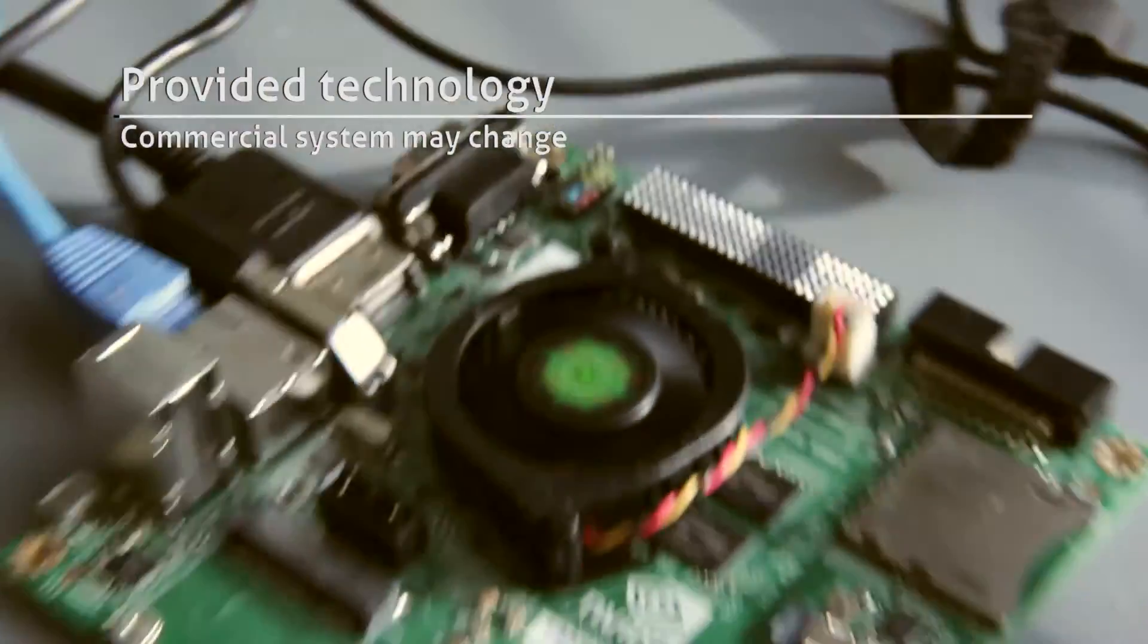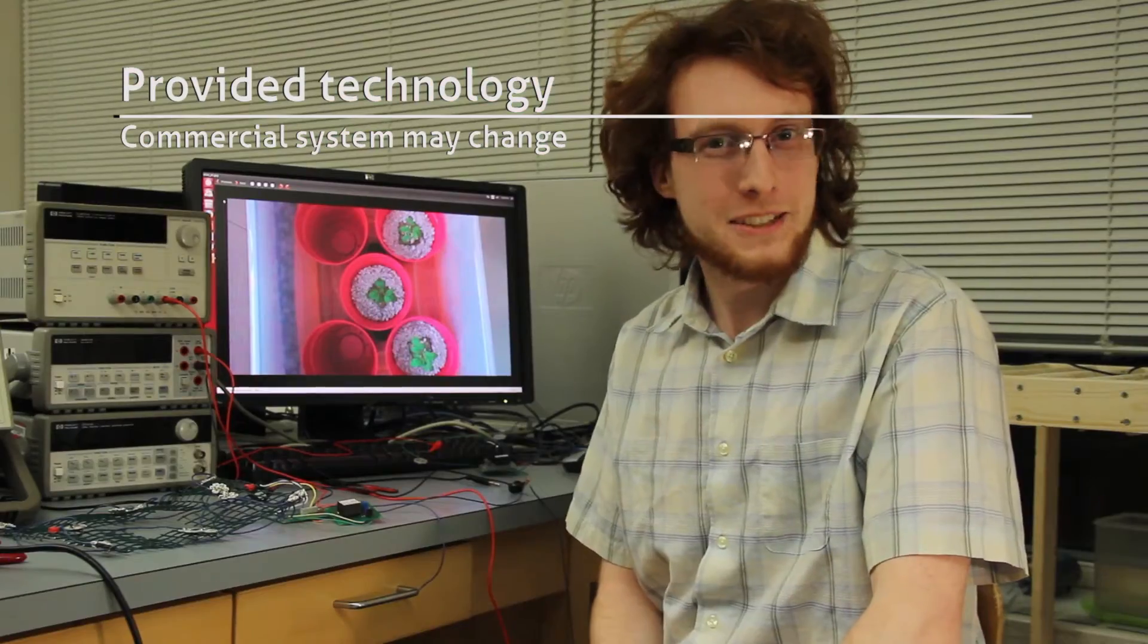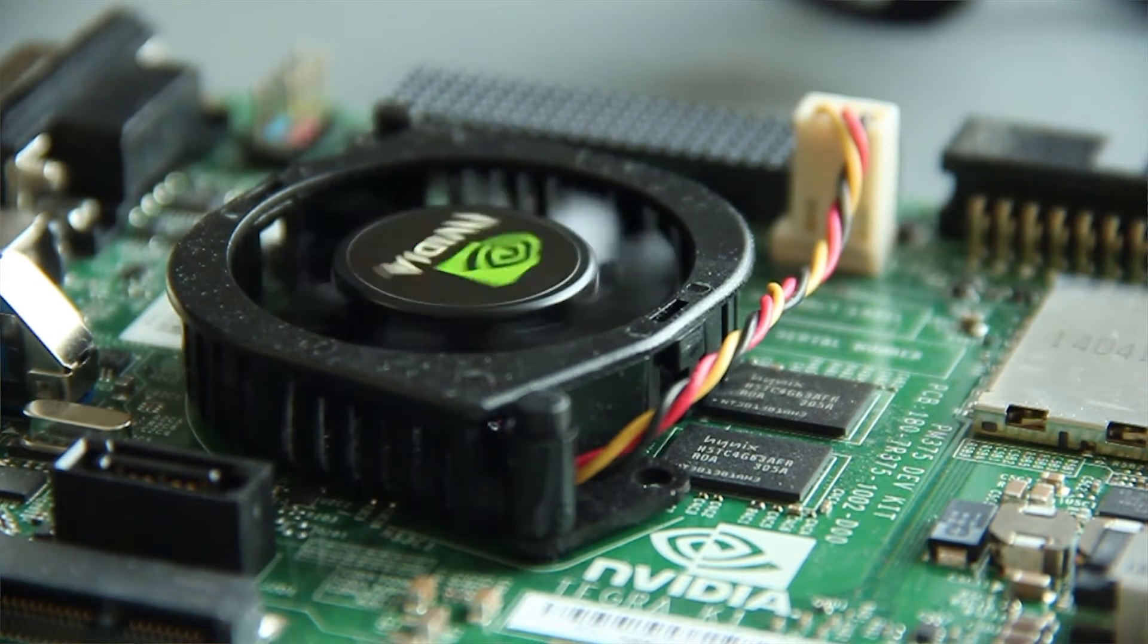So this is the NVIDIA Tegra. It is the back-end embedded system we are using. It is a quad-core, 2.3 gigahertz, 2 gigabytes RAM supercomputer microcontroller. Basically, we have a very smart GrowBox.